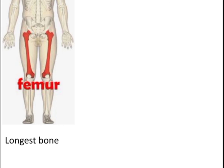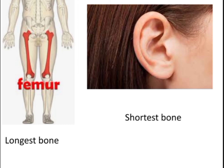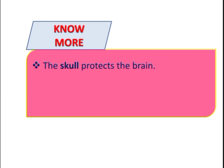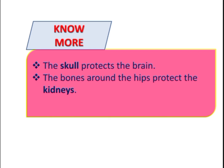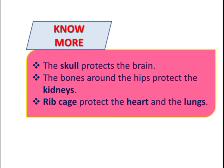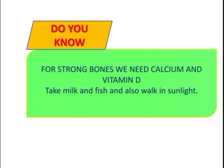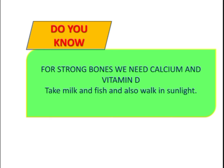The longest bone in the human body is the femur, present in the thigh area. The shortest or smallest bone in the human body is the stapes, present in the middle ear. The skull protects the brain, the bones around the hip area protect the kidneys, and the rib cage protects the heart and lungs. For strong bones, we need calcium and vitamin D — so take milk and fish and also walk in the sunlight.